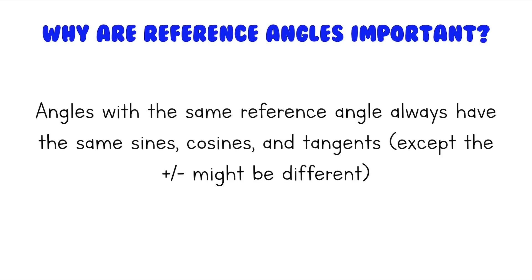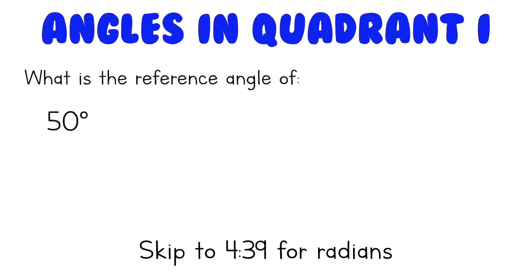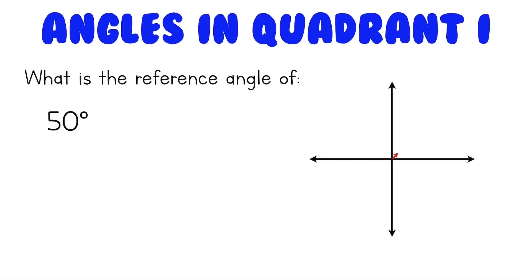How do you find the reference angle of an angle? Let's start with angles in the first quadrant. What is the reference angle of 50 degrees? We'll pull out our coordinate plane and draw out a 50 degree angle. The reference angle is the angle that the terminal side makes with the x-axis. Since this 50 degree angle is in the first quadrant, it's going to make an angle with the positive x-axis, and that angle is just 50 degrees.